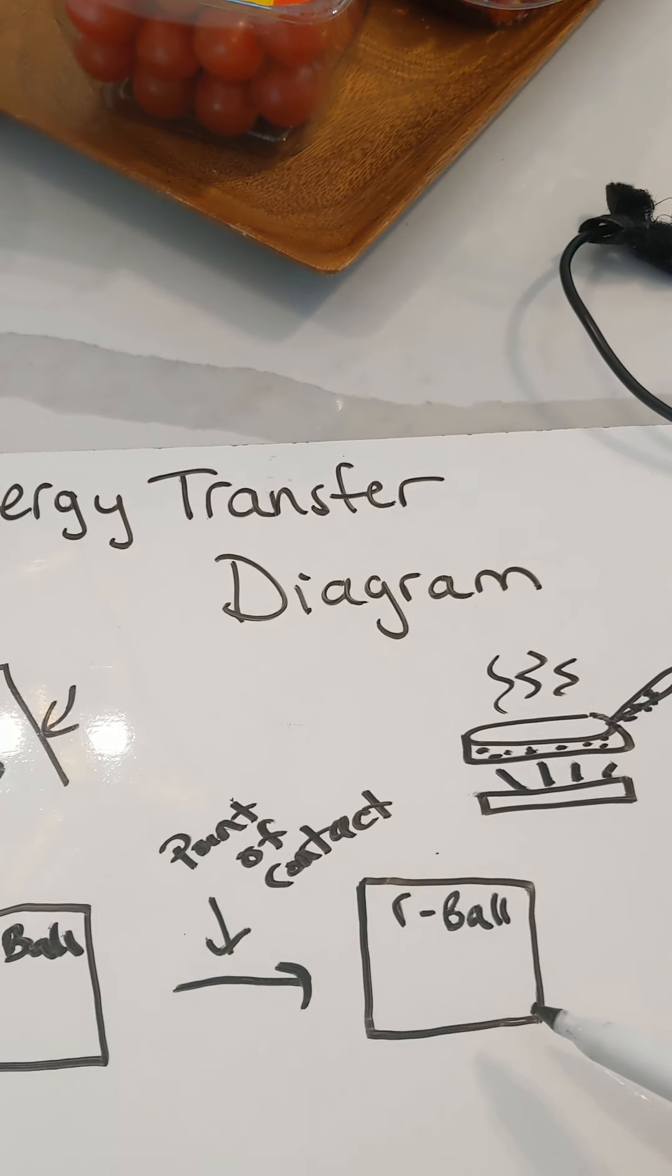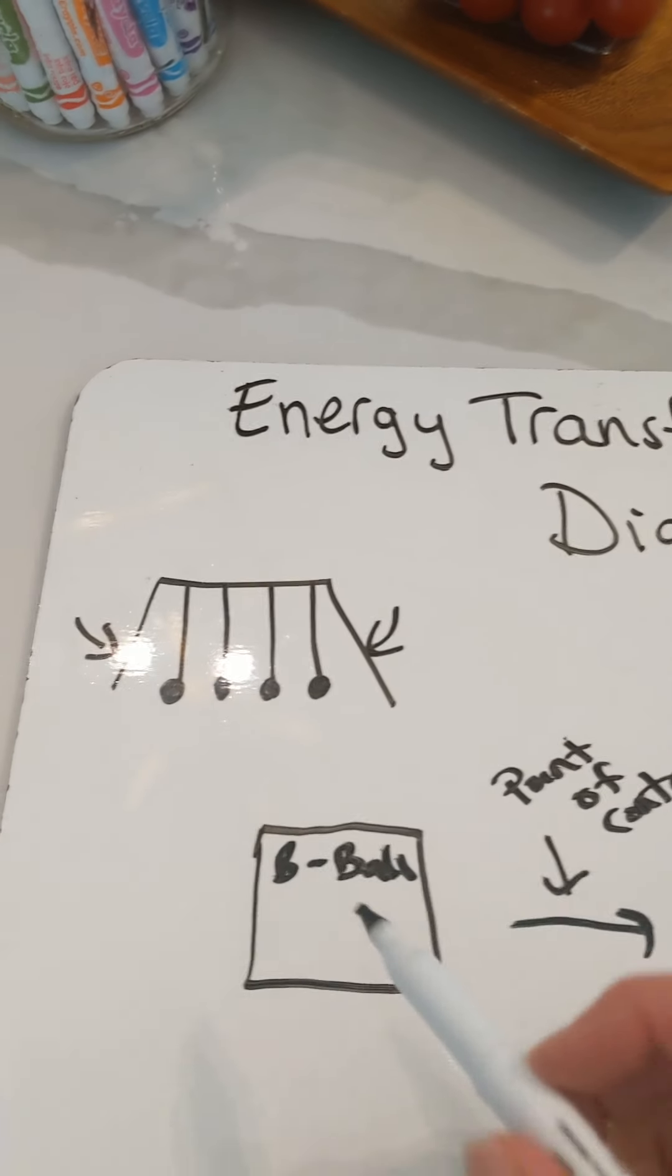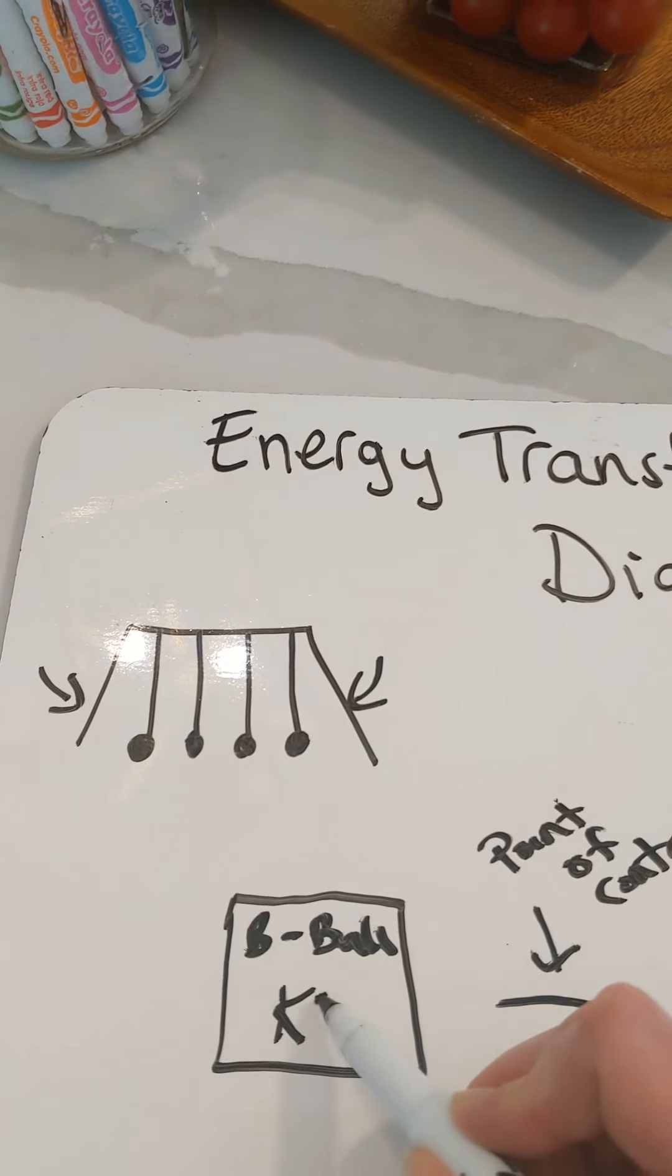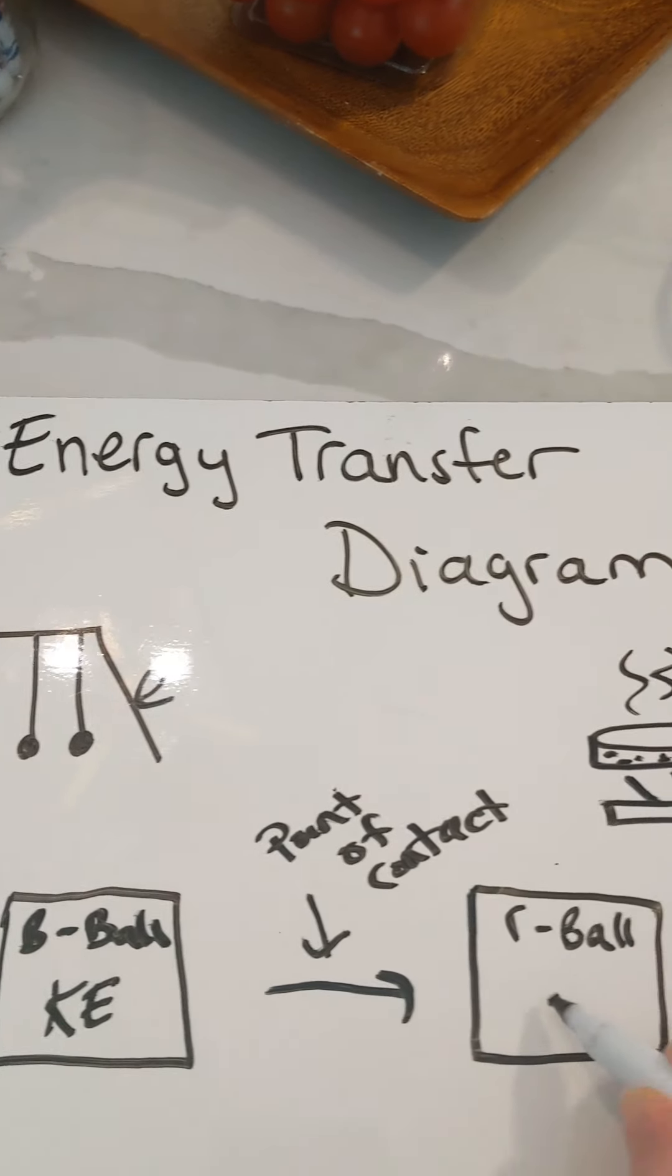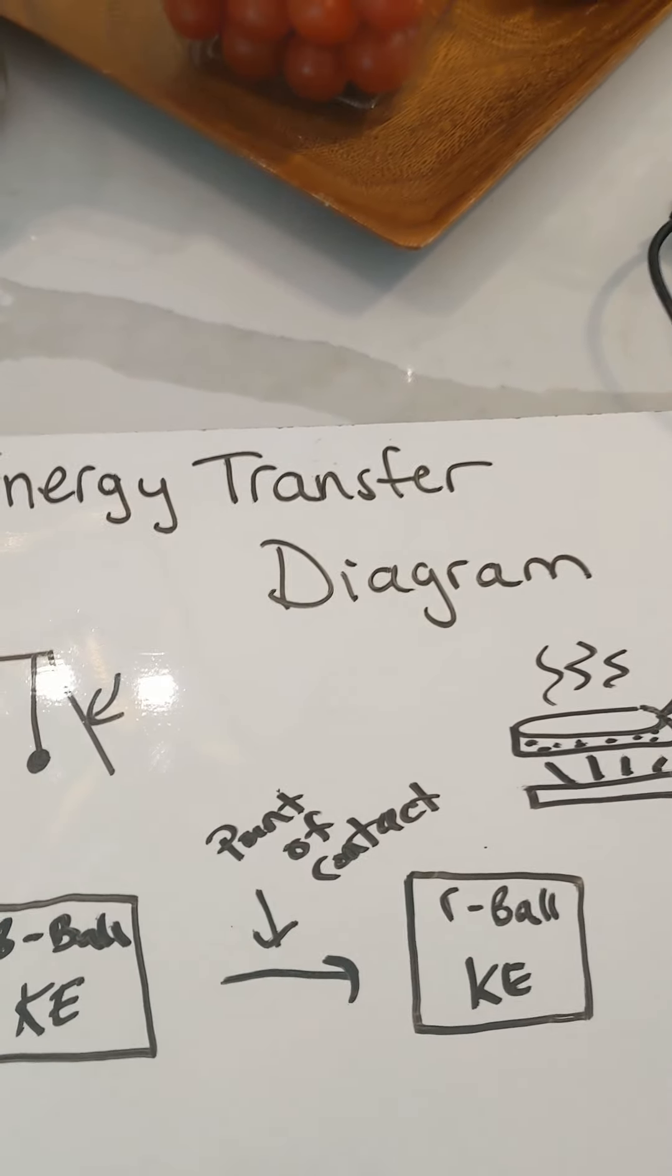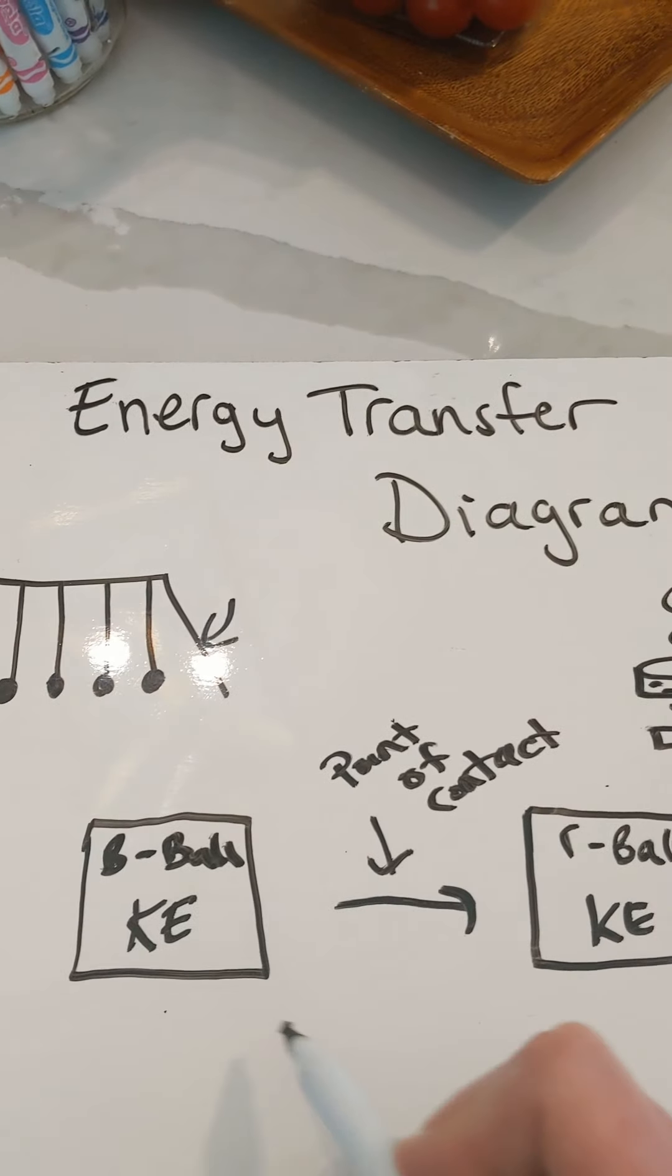So that tells us that if it went higher, there's motion involved. So the energy that was transferred, if there's motion involved from the basketball to the racquetball, is kinetic. And this is what an energy transfer diagram looks like.